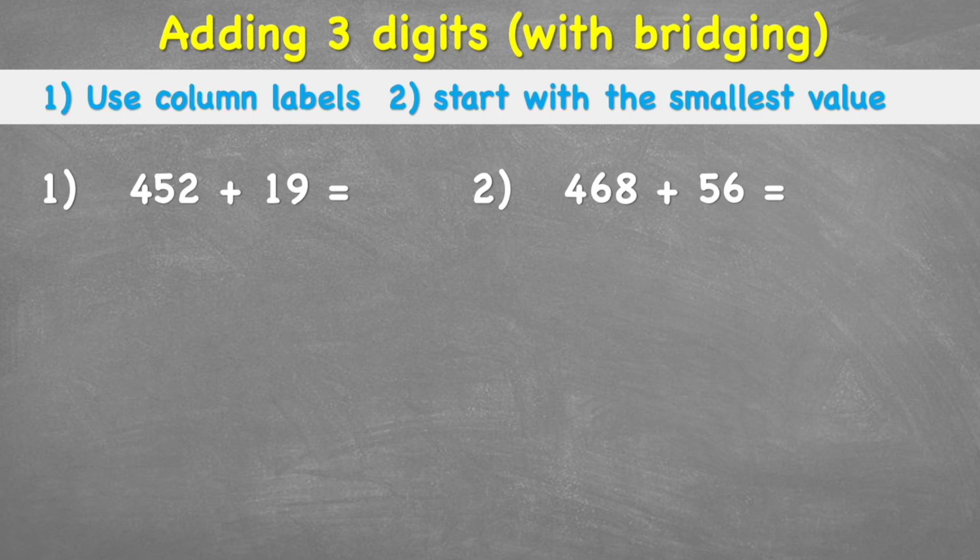What is up everybody, welcome back to the maths guy. Today we're looking at how to add three-digit numbers with bridging. Let's jump into it. We're going to look at these two examples: number one, 452 add 19, and number two, 468 add 56. We're going to follow these two steps of success: we're going to use column labels and we're going to start with the smallest value. Let's look at what that means.